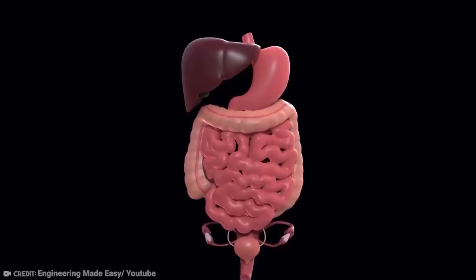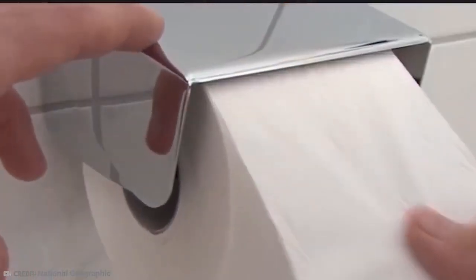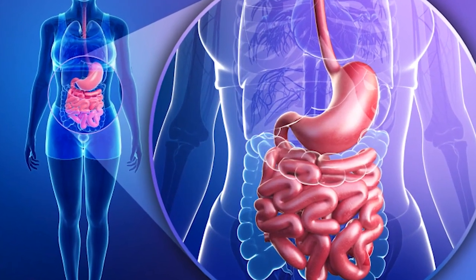At birth, your gut is sterile. Your genetic makeup and the bacteria in your surroundings have an impact on the diverse colony of bacteria that develops in your GI tract over time.